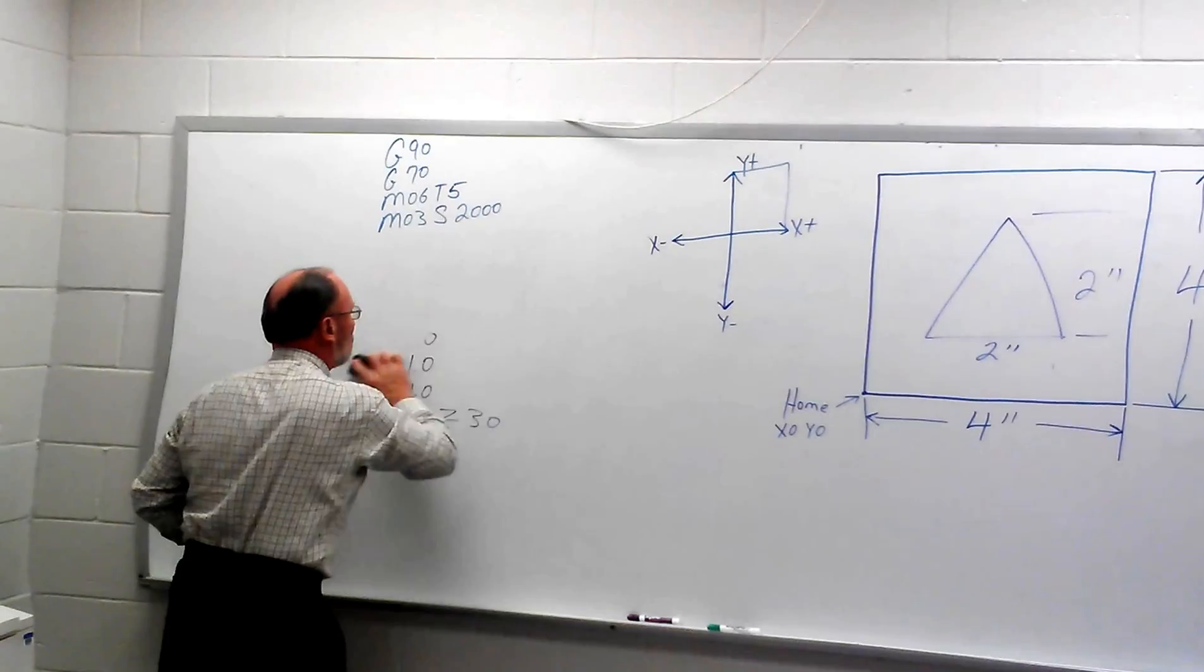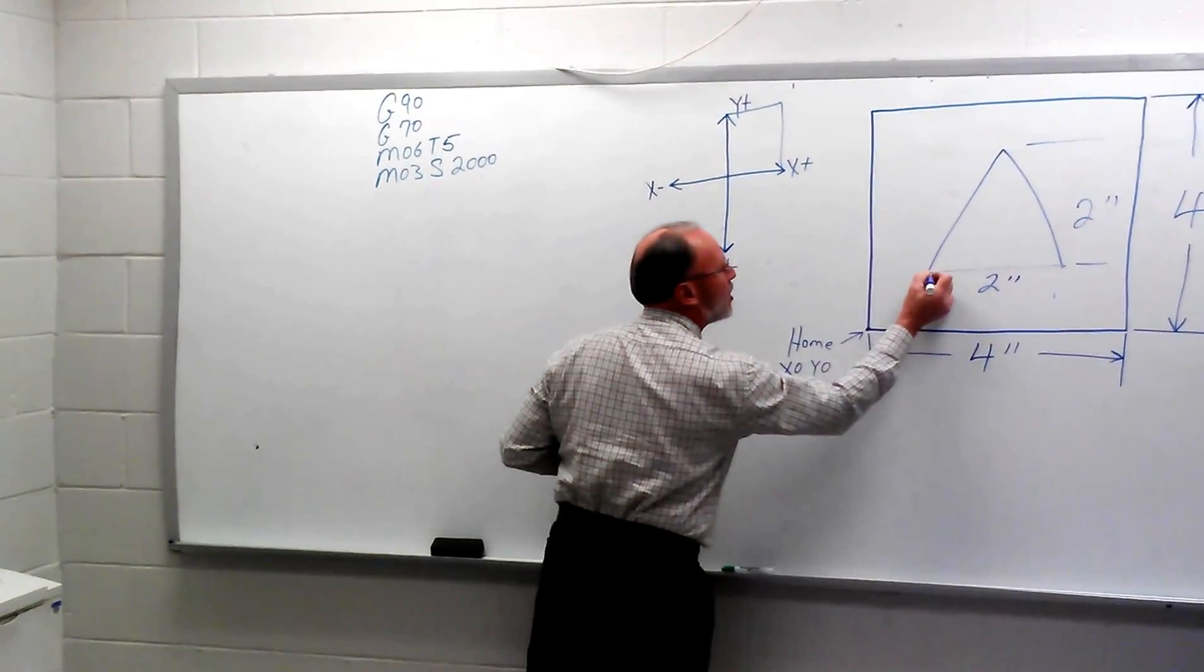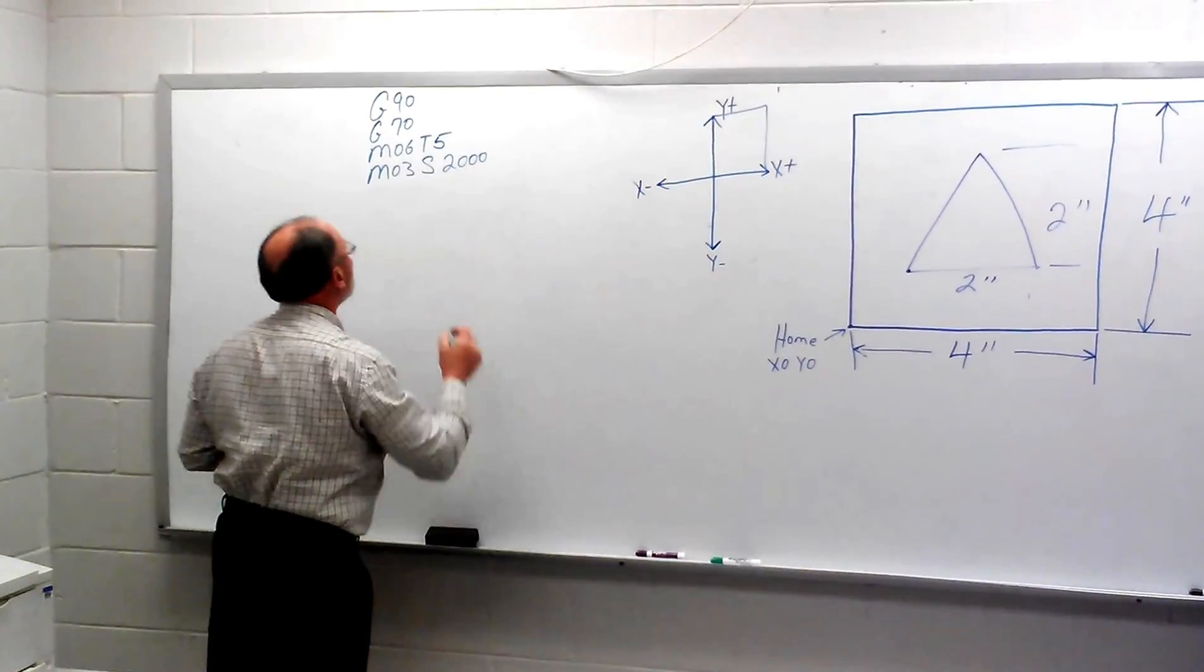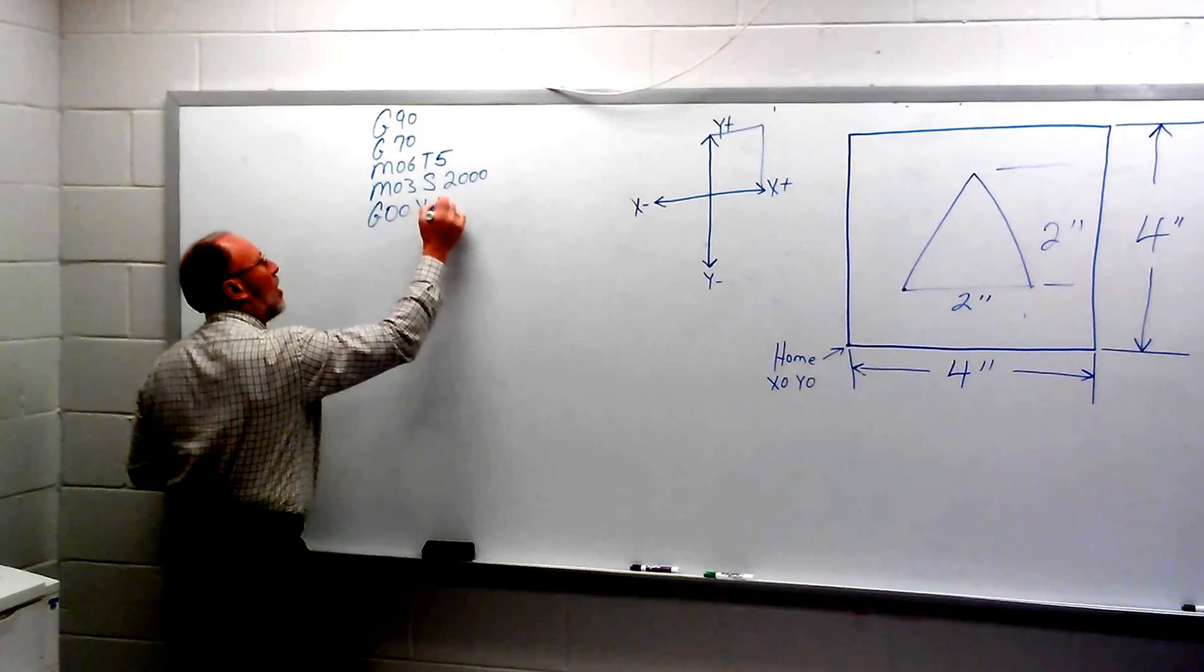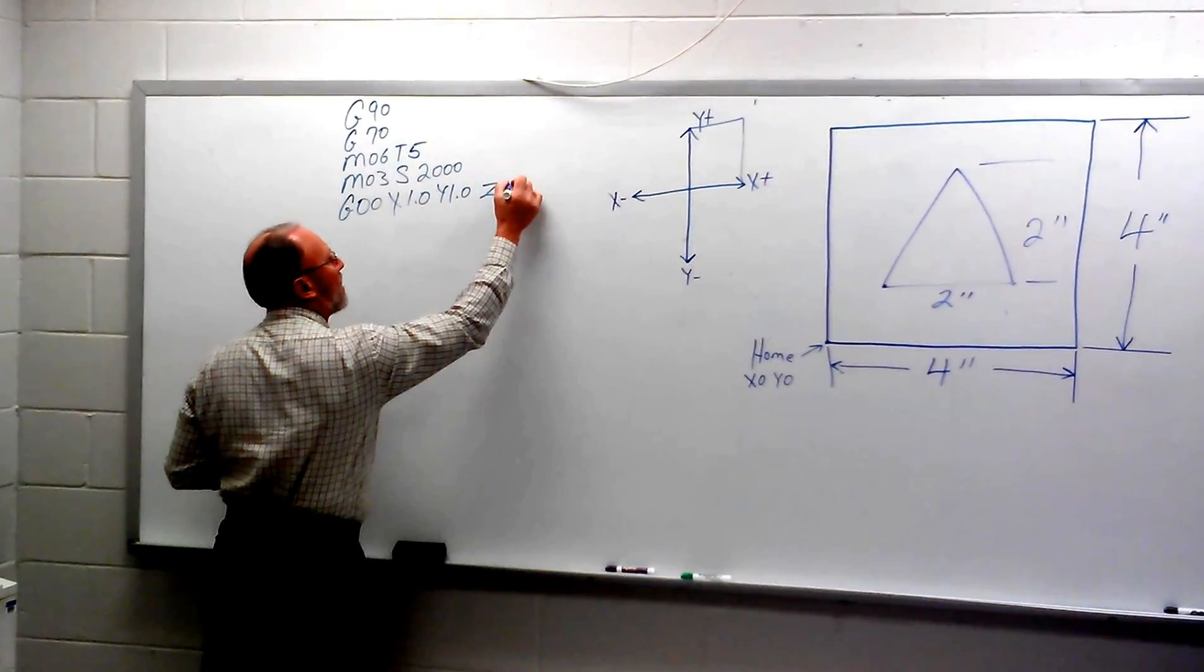So if I erase this and find my start point, my start point is going to be the same thing, and the X is going to be 1 inch, and the Y is going to be 1 inch. So if we rapid to that point, X1.0, Y1.0, we'll take Z within 100,000 of that surface.